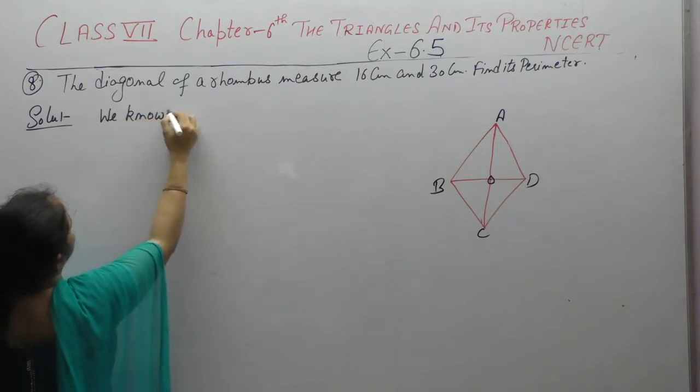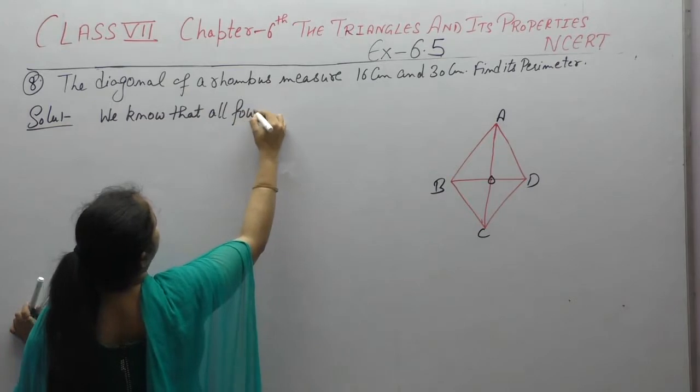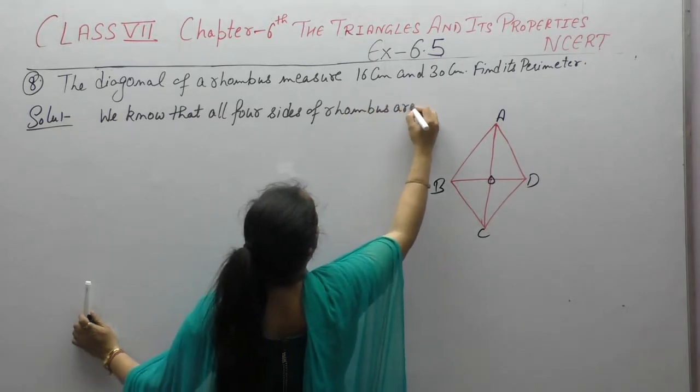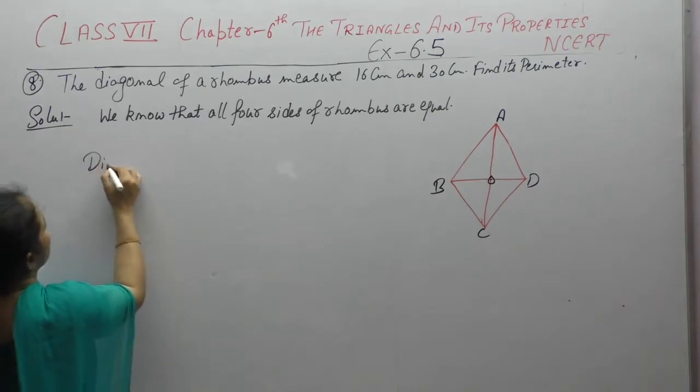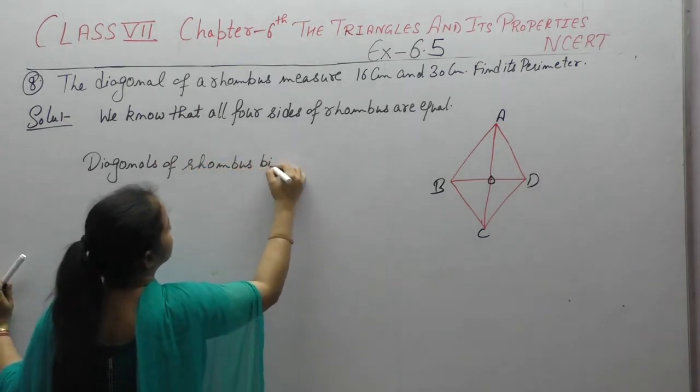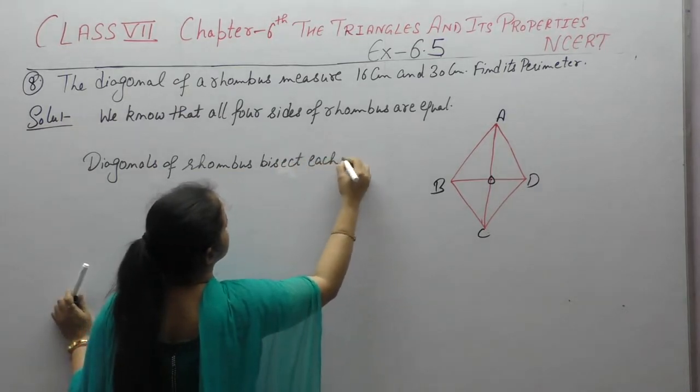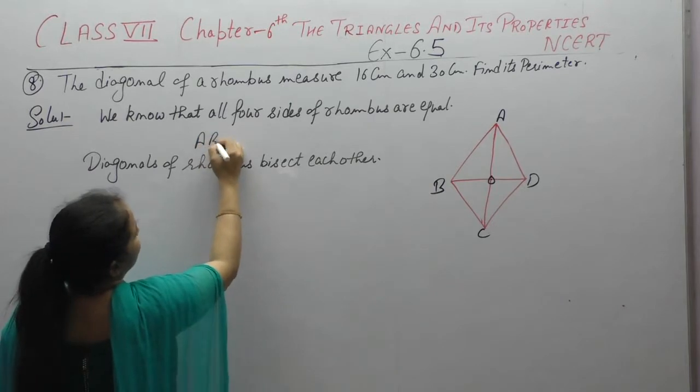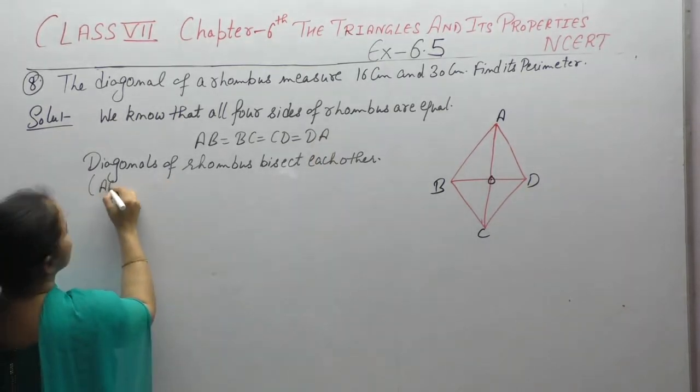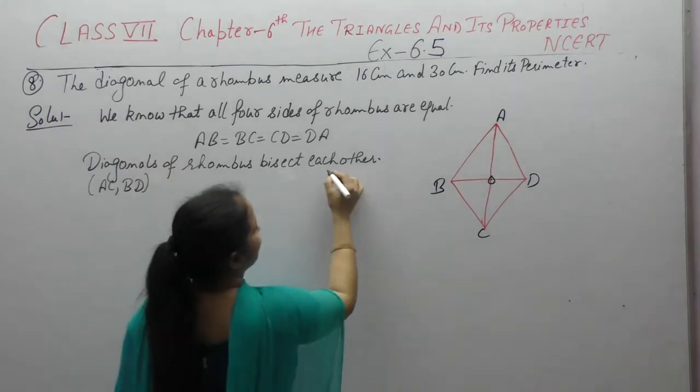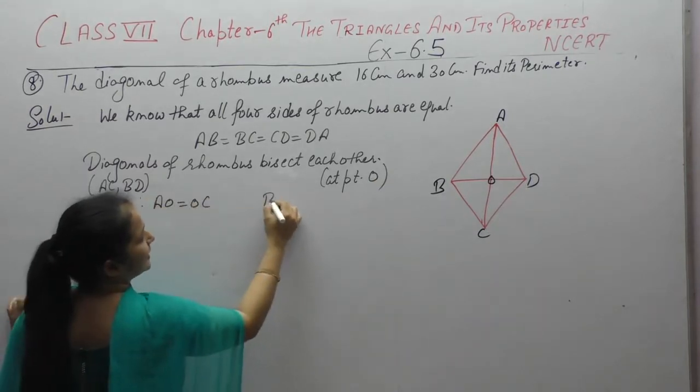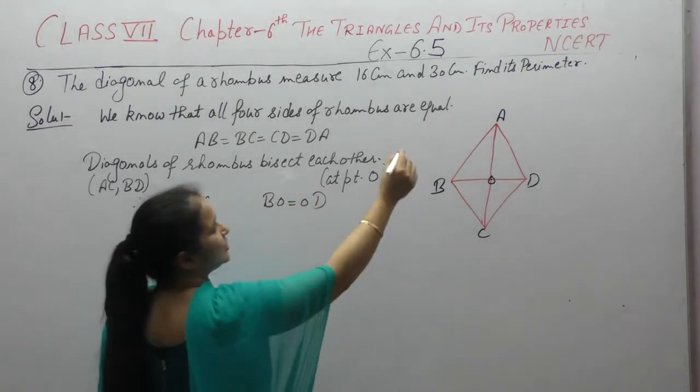We know that all four sides of rhombus are equal. Diagonals of rhombus bisect each other. AB is equal to BC, CD, DA. Diagonals of rhombus AC and BD bisect each other. At which point do they bisect? At point O. If they bisect, it means AO is equal to OC, BO is equal to OD. Now the diagonal AC...